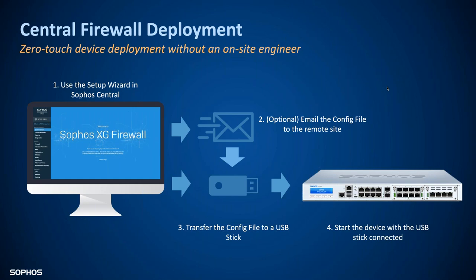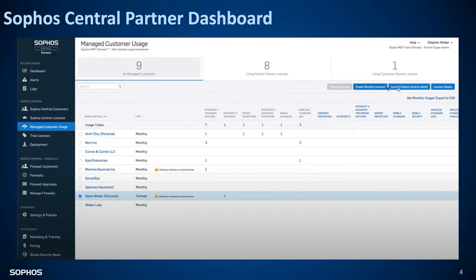The onboarding is based on a setup wizard for the XG firewall set up through Sophos Central Admin — through the customer's dashboard, not the partner dashboard. You'll log into your partner dashboard, go into the customer's central admin account, and from there go to firewall management and walk through the setup process. Starting from my Sophos Central partner dashboard, we'll select my Steve Weber personal account and launch into the Sophos Central admin account for that customer.